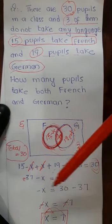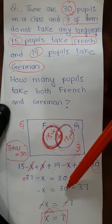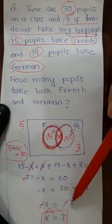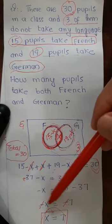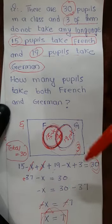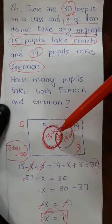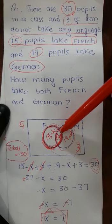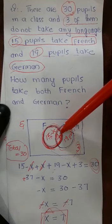Now, 37 on coming to the right side of the equation is subtracted from 30. So 30 minus 37 gives minus 7. Therefore, minus X equals minus 7. Cancelling the minus sign on both sides, X equals 7. So X, which represents the students studying both French and German, is 7.